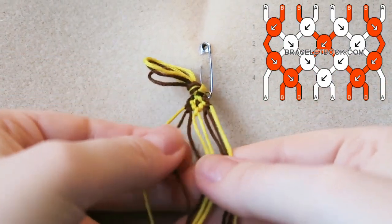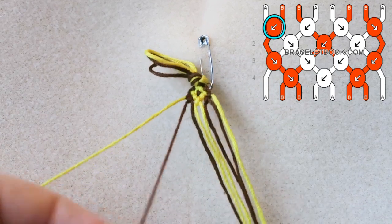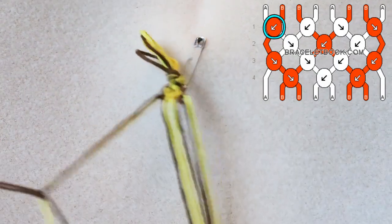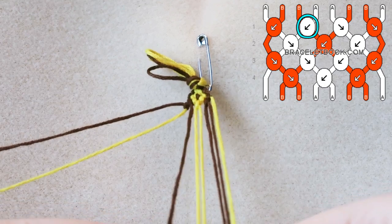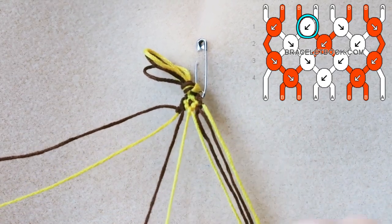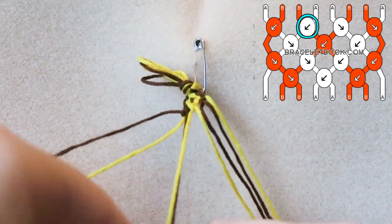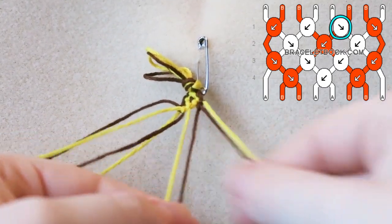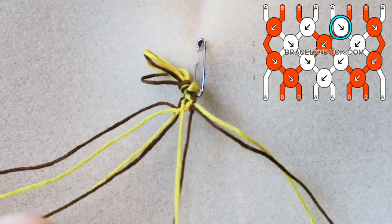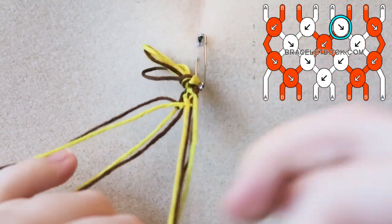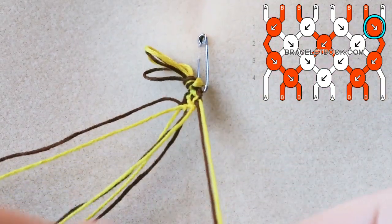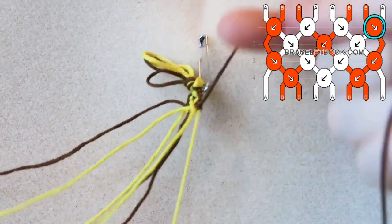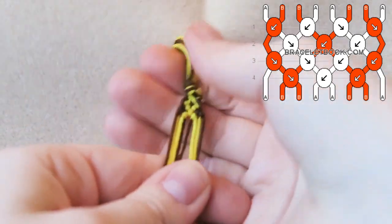I'm just going to talk you through the pattern for one more round. We're going to take this second brown thread and knot it in a backwards knot over the first yellow thread. Then we are going to take the first inside yellow thread and knot it in a backwards knot over the brown. Then we're going to take this inside yellow thread and tie a forwards knot over the brown. Then we are going to take the next brown thread, which is this one, and tie a forwards knot over the yellow. Remember that you tie each knot twice.